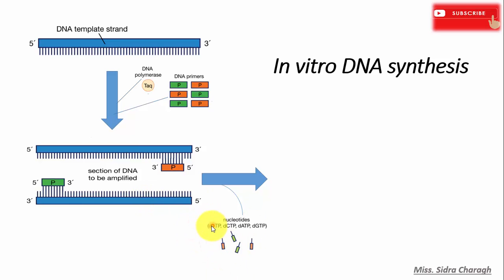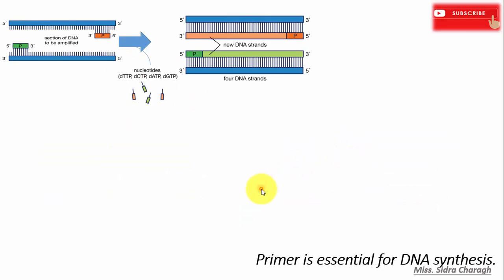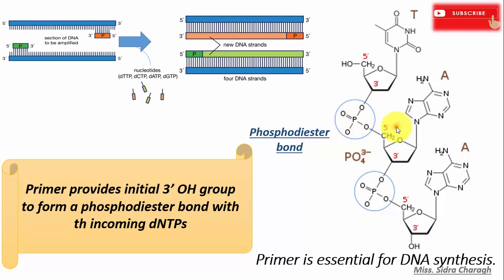The primer serves as a starting point for DNA synthesis. DNA polymerase requires a three prime hydroxyl group to form a phosphodiester bond with the incoming nucleotide, and this initial three prime hydroxyl group is provided by the primer. Once DNA synthesis is initiated, each deoxynucleotide incorporated gives the growing DNA chain a new three prime hydroxyl group, and thus DNA polymerase keeps on elongating the chain.